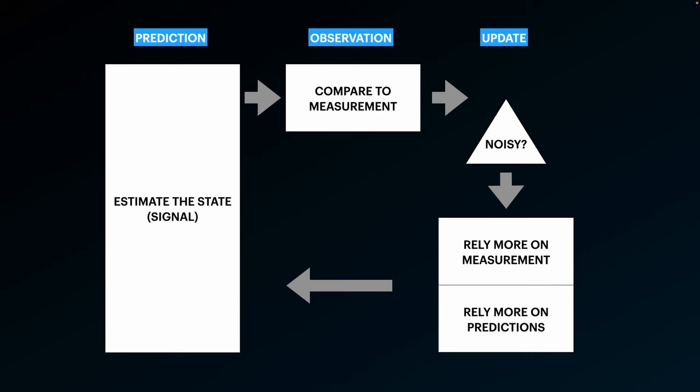So let's say you want to predict something. You take that prediction and then you have your actual observation of a real value. You compare that measurement with the actual prediction or estimate you made. And you have to ask the question: how noisy is that measurement? Should I rely more on my predicted value, or more on the measurement, and adjust accordingly? This is a very high level view of what a Kalman filter is doing. It's taking real data, making predictions on it, correcting itself, and figuring out how much error there likely is in that process.